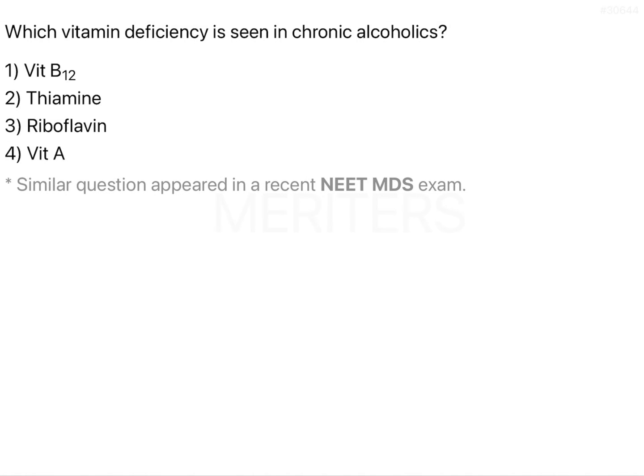Which vitamin deficiency is seen in chronic alcoholics? Options are vitamin B12, thiamine, riboflavin, and vitamin A.